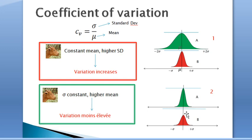All right, now the coefficient of variation is estimated as follows: we have sigma divided by the mean. Now what is the significance of the coefficient of variation?